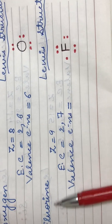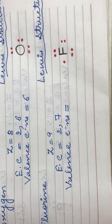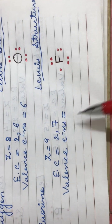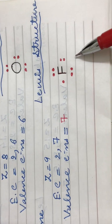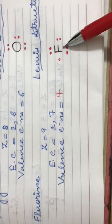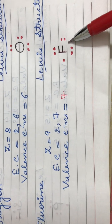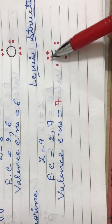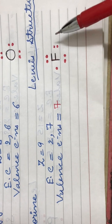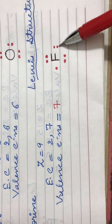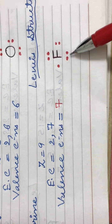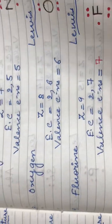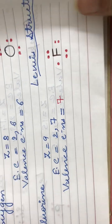Next element is fluorine. It has an atomic number of nine. Its electronic configuration is 2,7 and it has seven valence electrons. The Lewis structure for fluorine is written as the symbol F with seven dots around it — two at the top, two on the right, two at the bottom, and one on the remaining side.